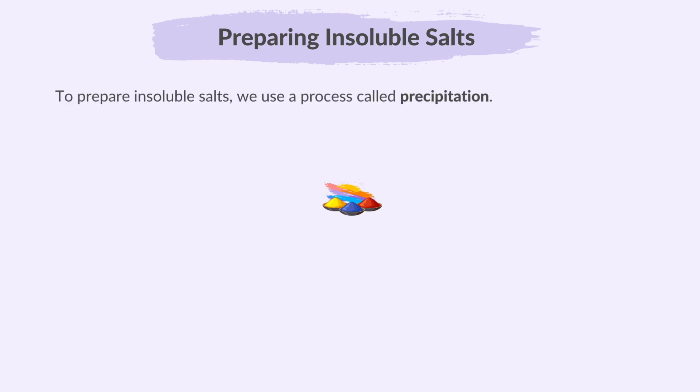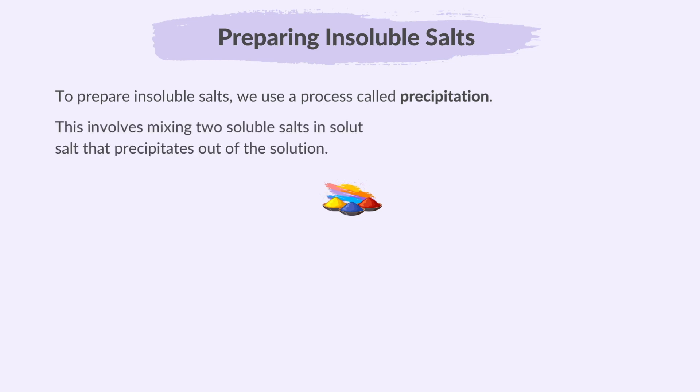To prepare insoluble salts, we use a process called precipitation. This involves mixing two soluble salts in solution, which react to form an insoluble salt that precipitates out of the solution.